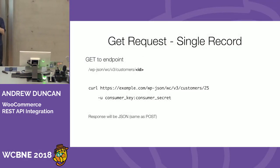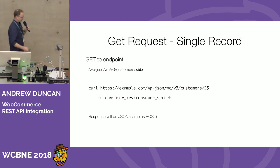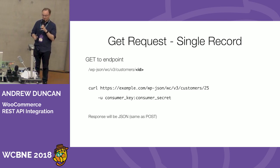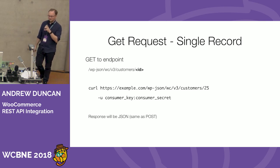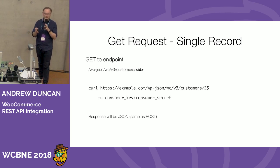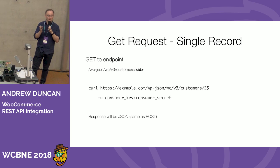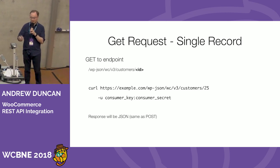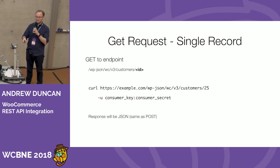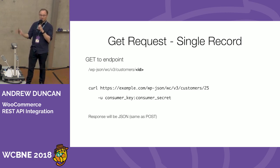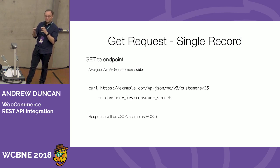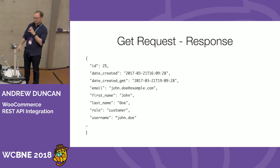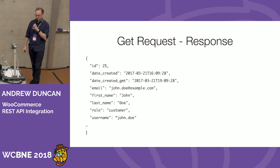Now let's talk about downloading data from WooCommerce using a GET request. There are two types: getting a single record or a group of records. For a single record, like the update request, you specify the ID of the record you want to get and build out the URL, include the authentication header, and that's it — no JSON needed. You'll get back the full JSON object for that record.